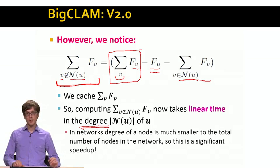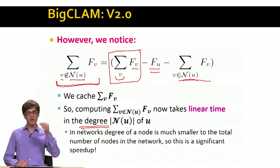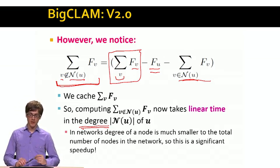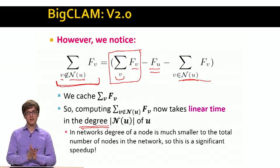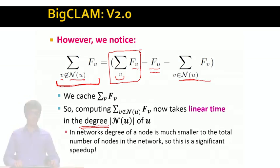But everything is still the same. The idea was we computed the gradient. Now that we have the gradient, we can do a simple gradient update to move up the hill and find the maximum likelihood solution, which is our matrix F. And what the matrix F has in itself, it basically tells us for every node what communities the given node belongs to.